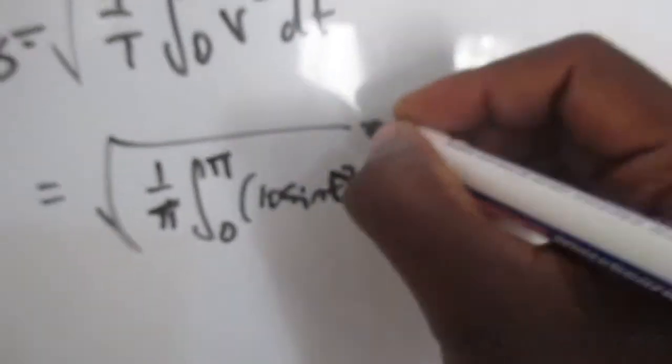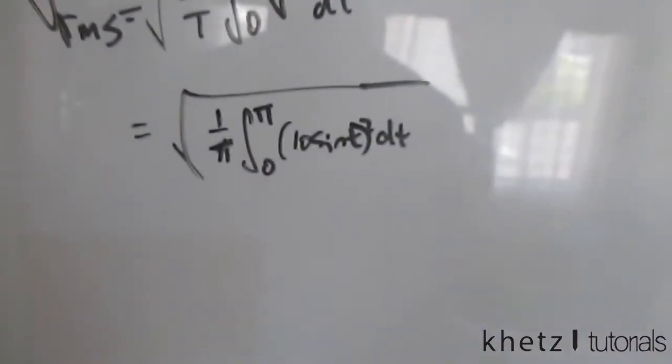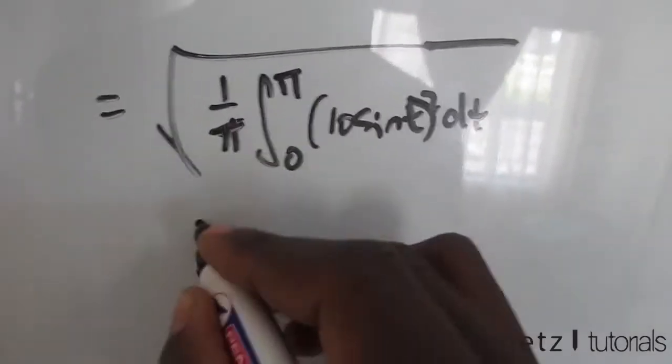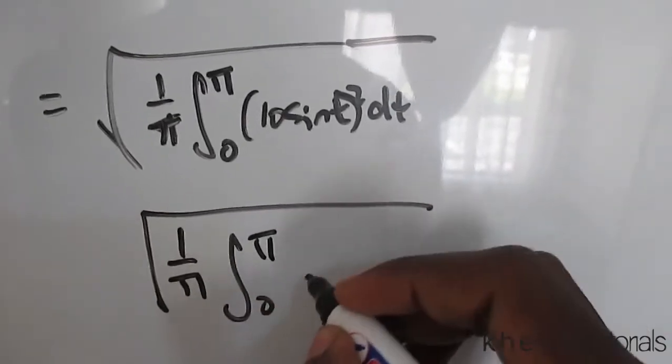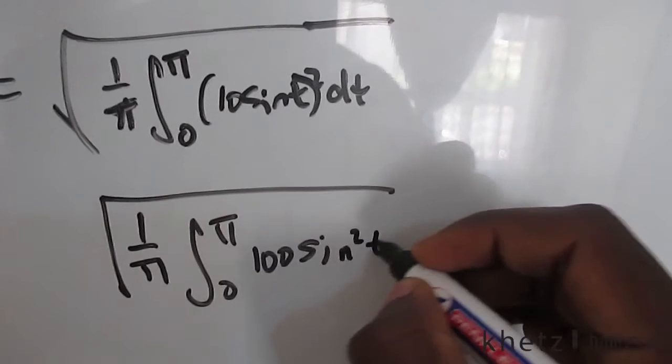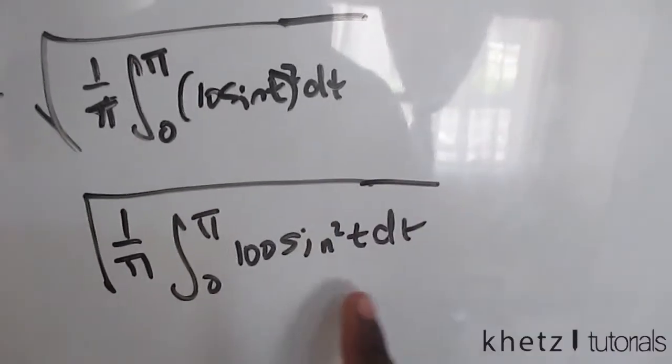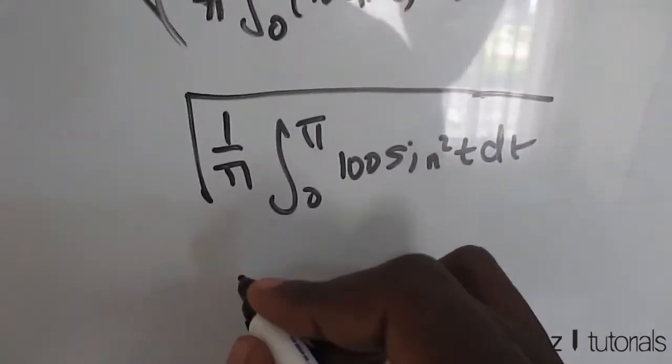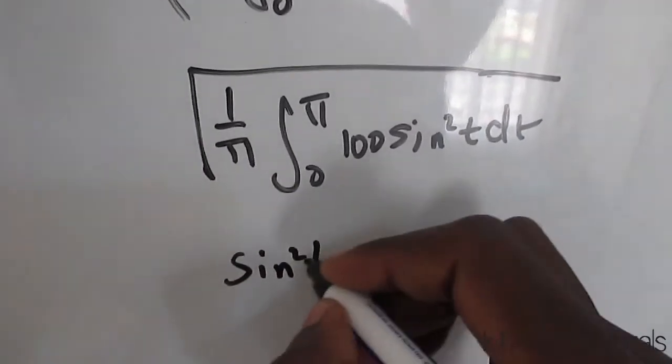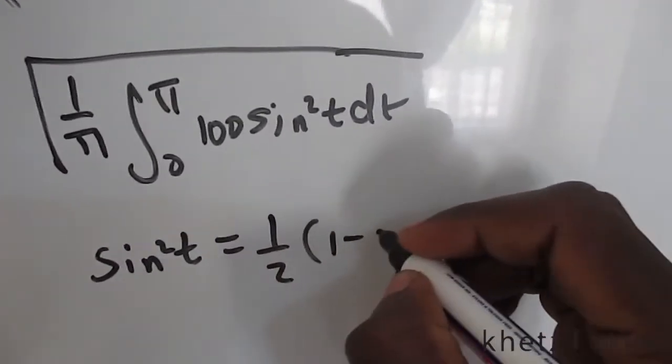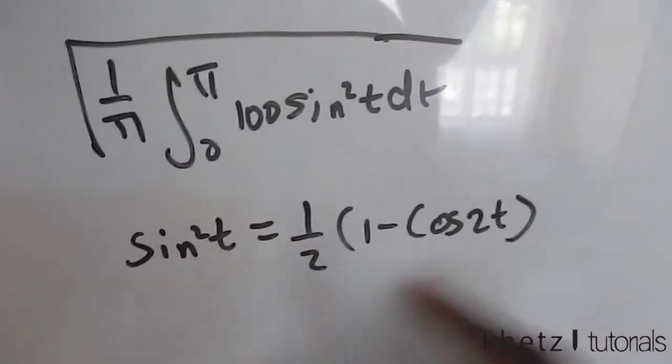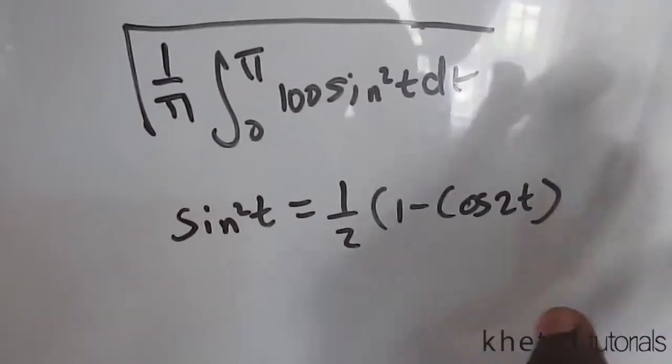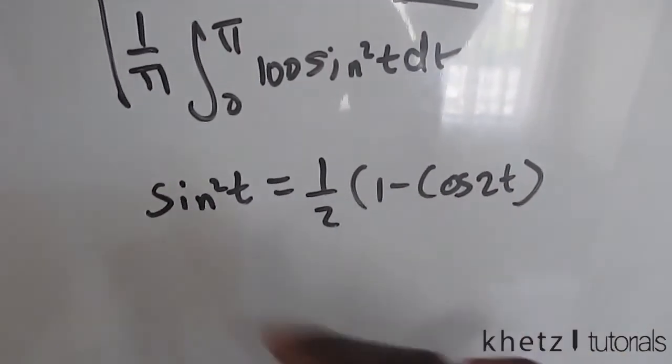After squaring, we have 1 over pi, integral from 0 to pi of 100 sine squared t dt. To simplify our analysis, we're going to use the identity which says sine squared t equals a half times 1 subtract cosine of 2t.